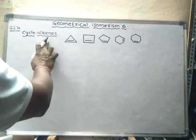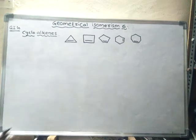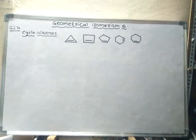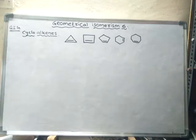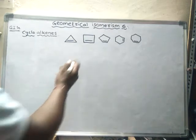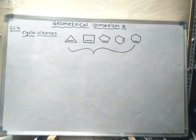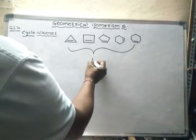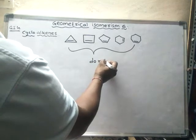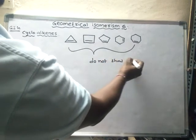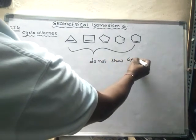All cycloalkanes having less than 8 carbon atoms in the ring do not show geometrical isomerism.